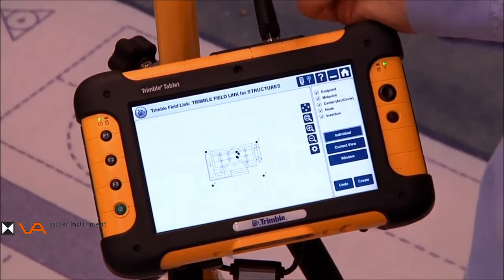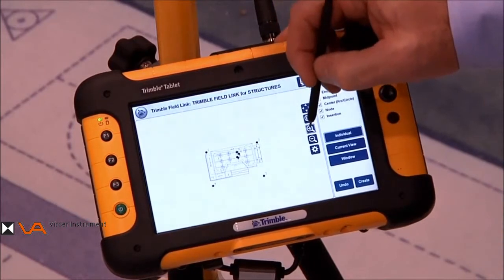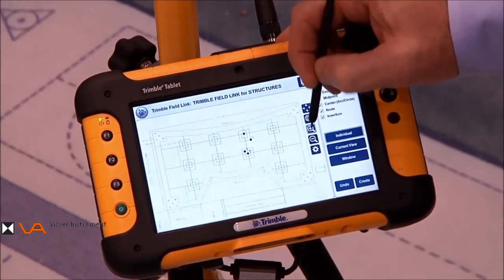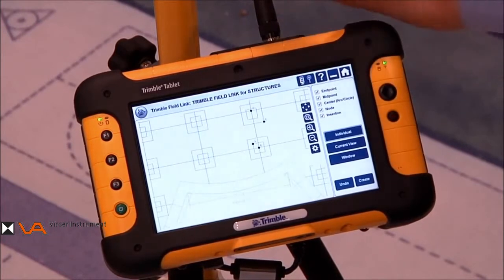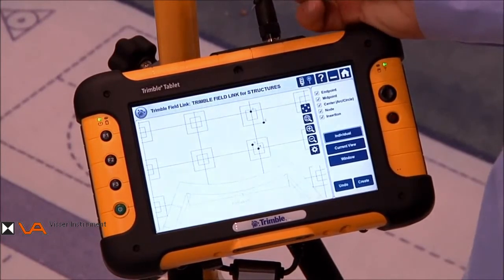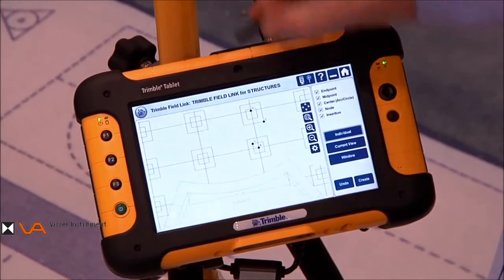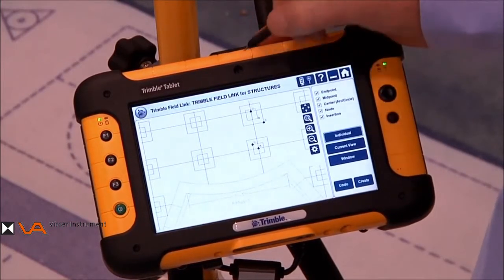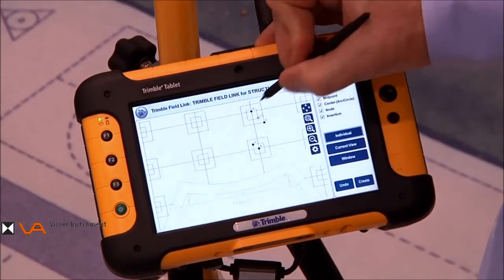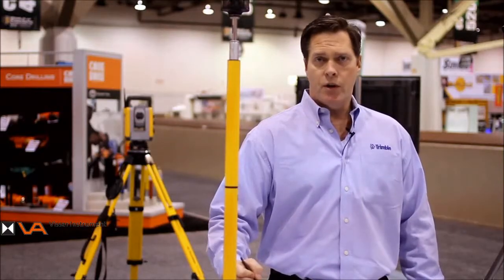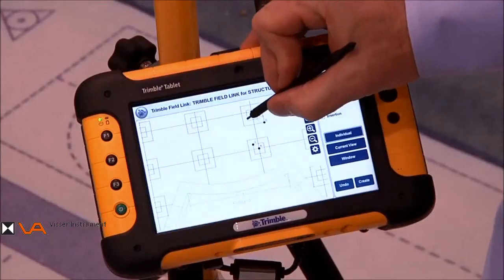When we've selected create from CAD, we have the ability to view the map. We can zoom in to the appropriate area, and we can now choose points in a number of ways. The first method is individually, and we tap the button that says Individual, and we simply tap the area that we want to select a point on. It shows up with a circle and a number.